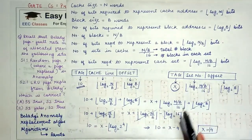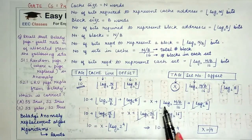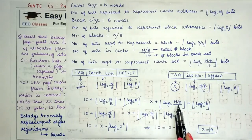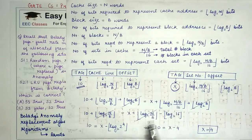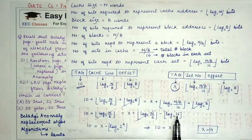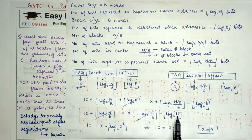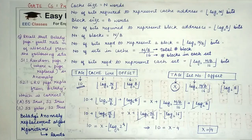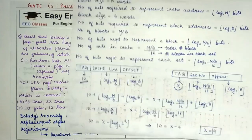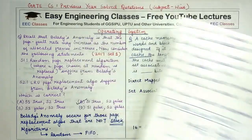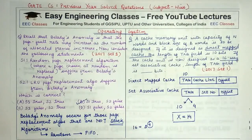Since both represent the same cache, you can equate them. Expanding log₂(N/B) as log₂(N/(16B)) + log₂16 = log₂(N/(16B)) + 4, you find that x = 10 + 4 = 14. This is the lengthier formal derivation confirming the shortcut answer.